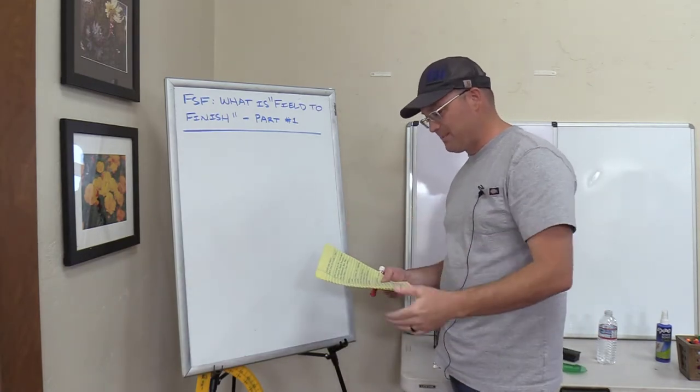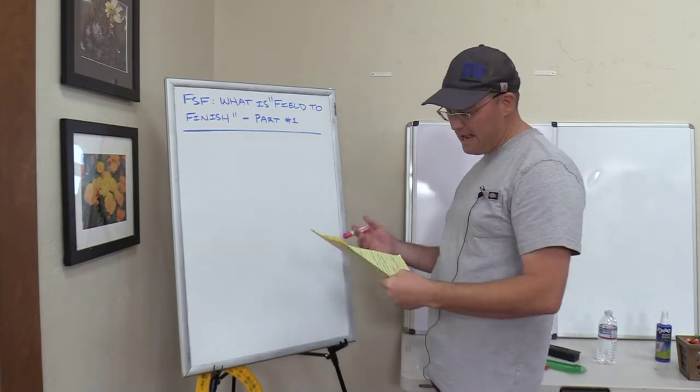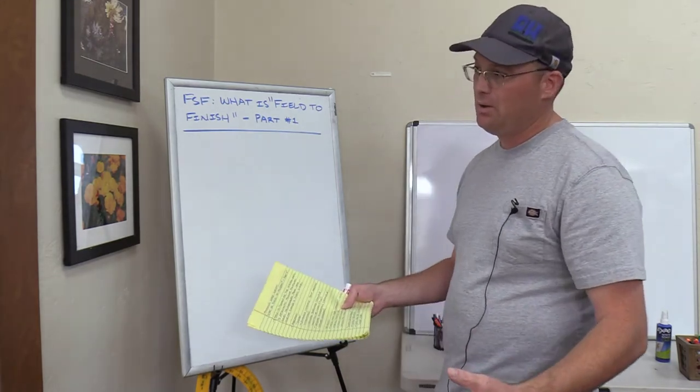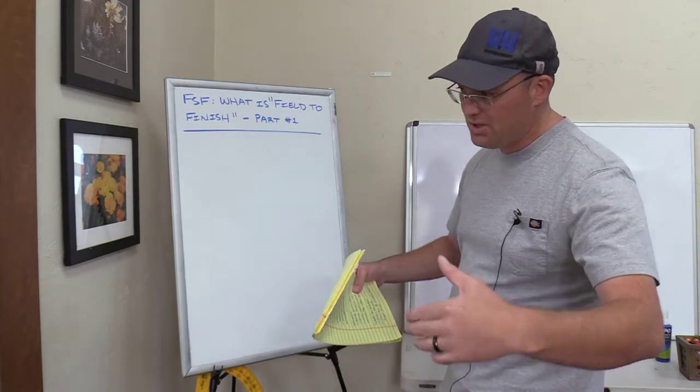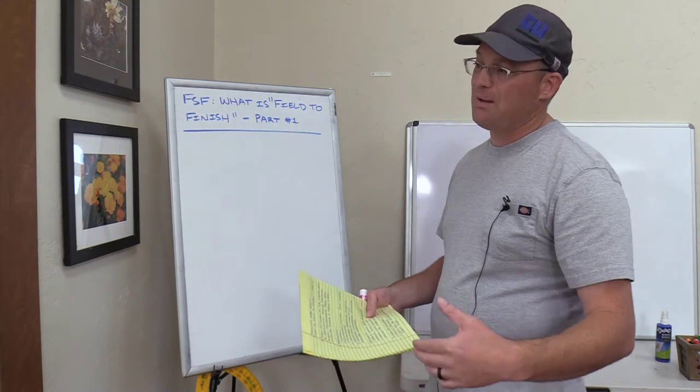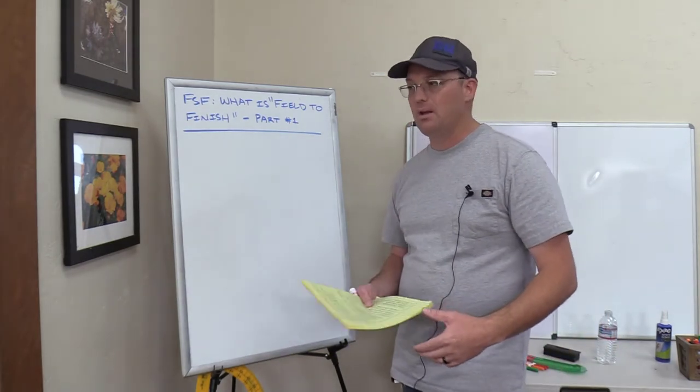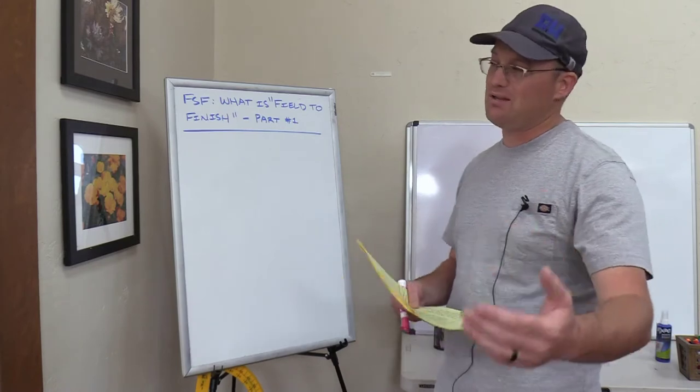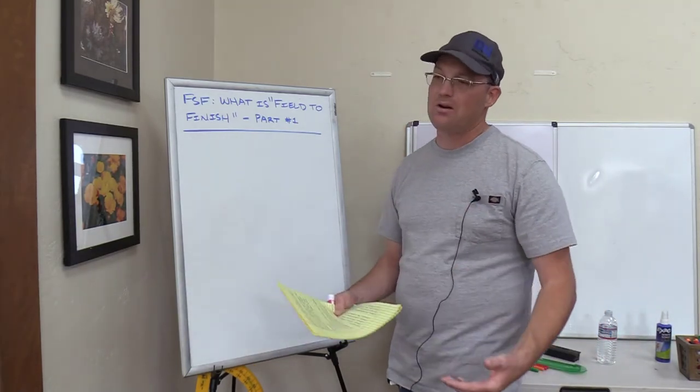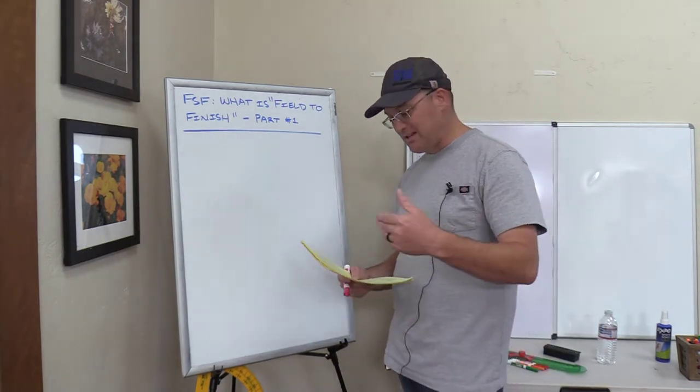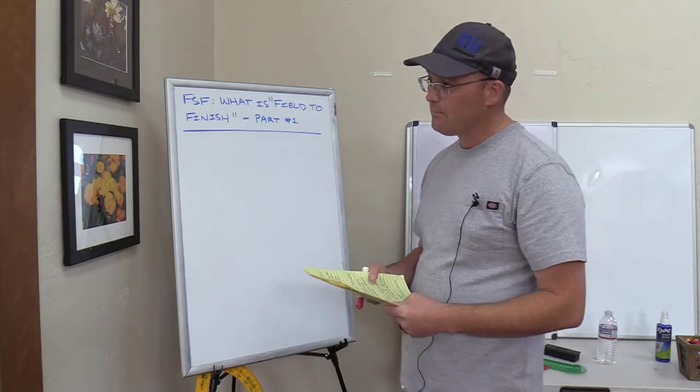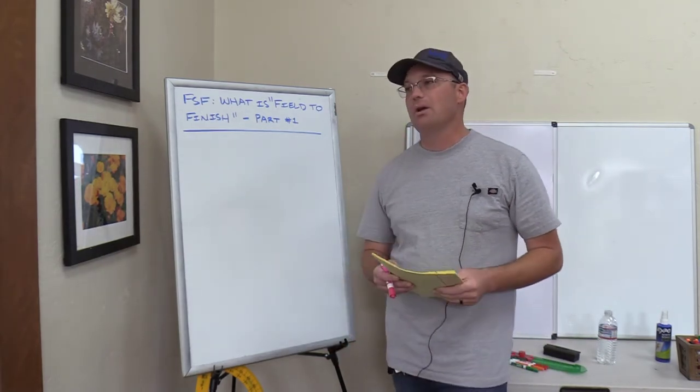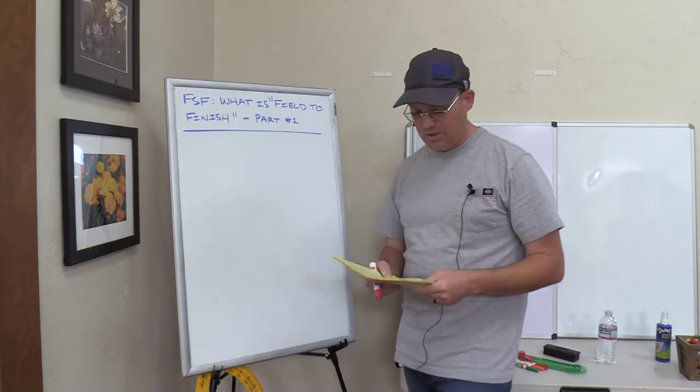Field to finish is the system used to efficiently produce finished survey deliverables from data collected during a field survey. Let's break that down. I said field to finish is the system. What do I mean by system? A system has some different parts. There are standards. For example, a point naming convention is an important part of a field to finish system. At my shop, we name control points 0 to 99. Aerial targets are 300 to 399. Conventional total station points are 10,000 to 19,999. We assign point ranges. Standards are part of the system.